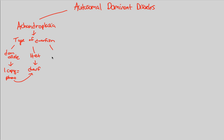What about the individual who is not a dwarf? The one who is not a dwarf is not the heterozygote, but the homozygous recessive individual — because this is an autosomal dominant disorder. If you have the dominant allele, you have the disorder. That's the basic idea behind autosomal dominant disorders.